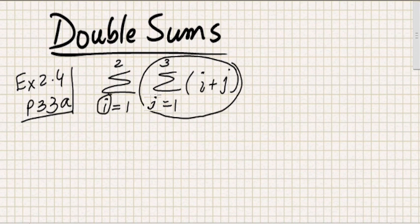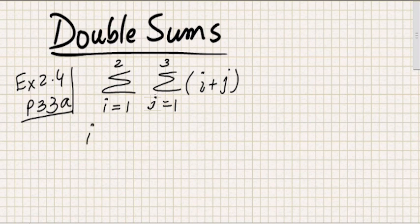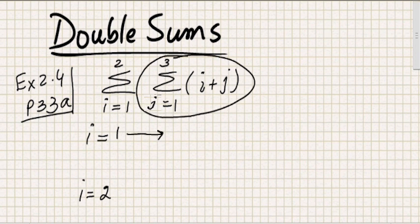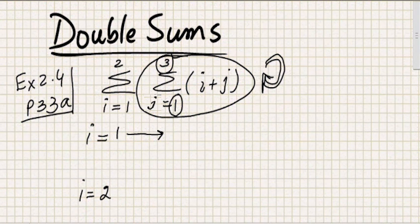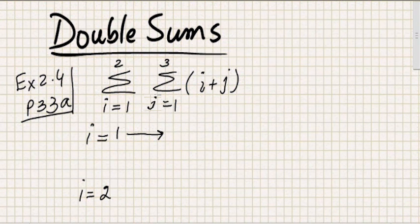In this particular example, there are only two values of i: i equals 1, and i equals 2. When i has value equal to 1, the inner summation is going to iterate from j=1 up to j=3 for that fixed value of i=1. Similarly, all those iterations are going to happen again for the fixed value of i equal to 2.